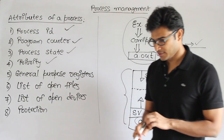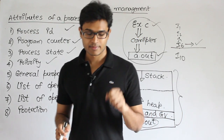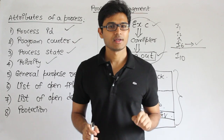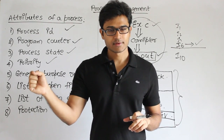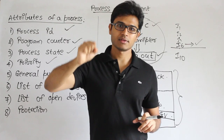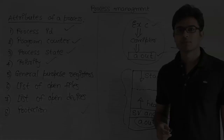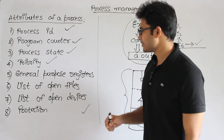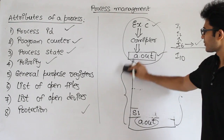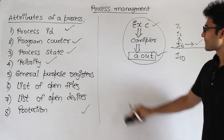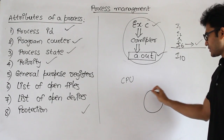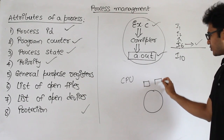Next there is something called General Purpose Registers. When you are executing a program, the CPU makes use of the registers. When you pull out that process, these registers will contain some numbers. If you have a CPU, it will have registers: R1, R2, R3, and so on.